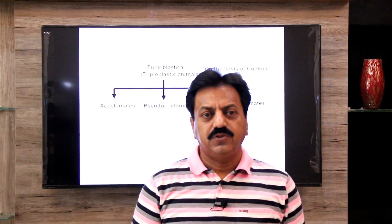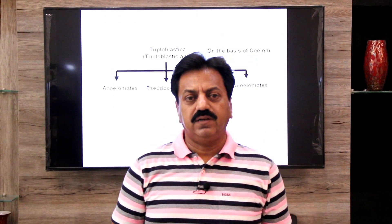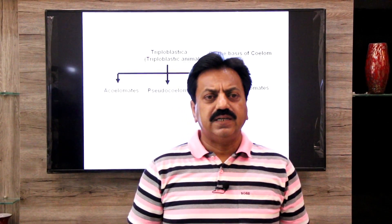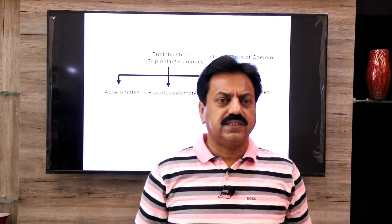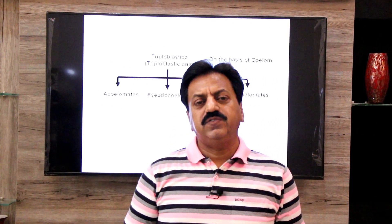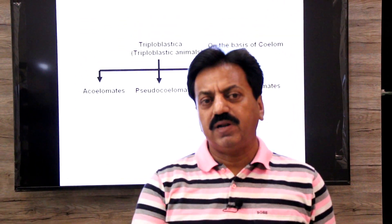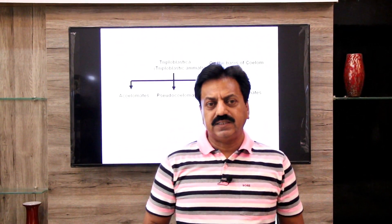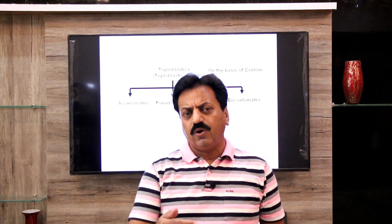Today I am with you to discuss the remaining portion of the Basis of Animal Classification. Yesterday we discussed three features: Levels of Organization, Classification of Animals on the Basis of Germ Layers in Embryo — that is Diploblastic and Triploblastic Animals — and the Basis of Symmetry and Symmetry Classification.